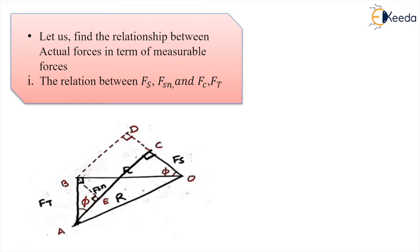In this diagram I have taken the shear force and normal to the shear force components — these are the actual forces — and we are relating these forces with the measurable forces. Measurable forces: only two forces are measured directly, these are fc and ft, cutting force and thrust force. So I have drawn only these two diagonal triangles of the Merchant circle.